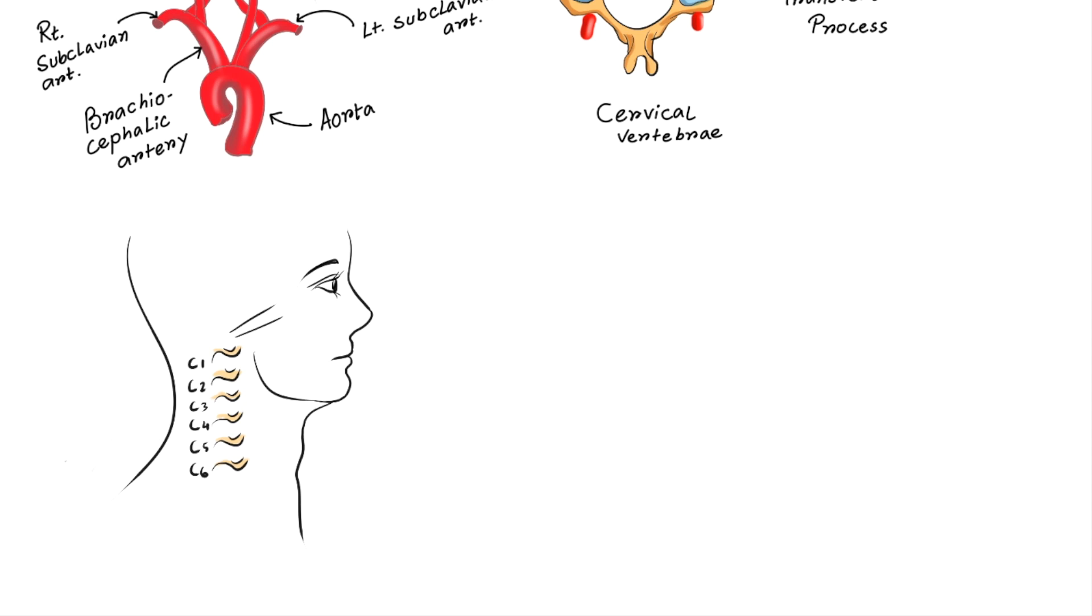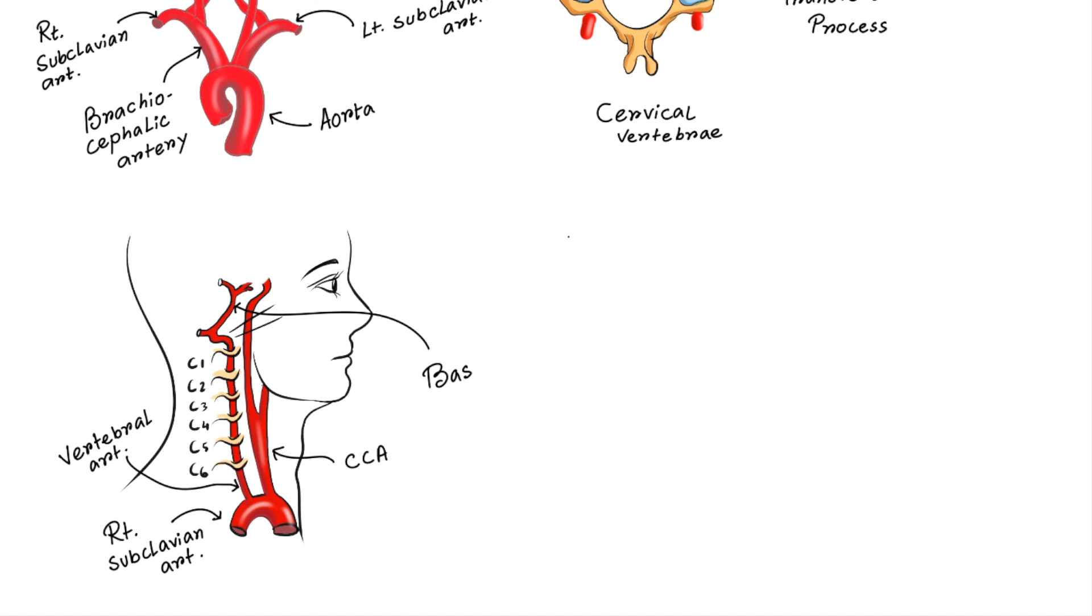Now, this is the lateral aspect of head and neck. Let's see how it goes upward. Here you can see right subclavian artery. Here this is right vertebral artery and this is common carotid artery. Vertebral artery enters into the transverse foramen of six cervical vertebra and finally comes out of the C1 or atlas. Now here this is basilar artery.